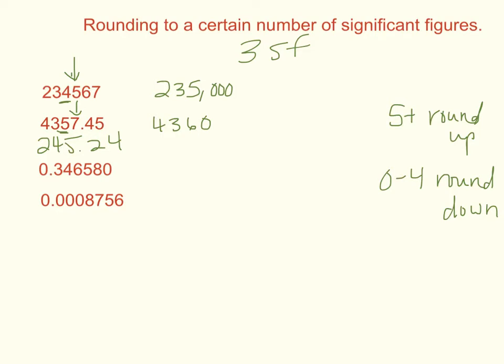And then this one, we have 245. Looking at our last digit, that means we'll leave the 5 the way it is. It's less than 4, so we round down to the 5.